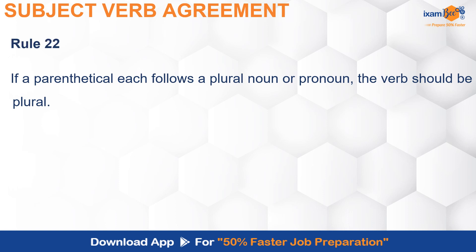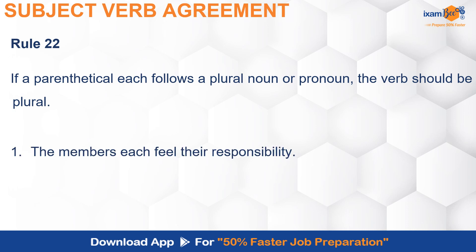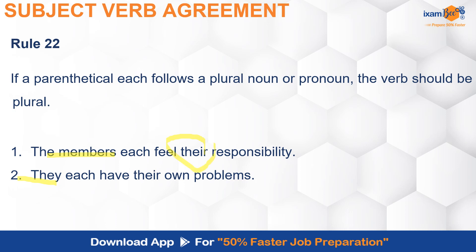The next rule says that if there is a parenthetical 'each' — meaning 'each' is used as an extra addition — and before it comes a plural noun or pronoun, then the verb will always be plural. For example: 'They each have their own problems' or 'The members each feel their responsibility.' Here, before 'each' you see a plural pronoun or plural noun, so the verb used is plural. The pronoun used will also be 'their', not 'his'. Another example: 'Ten each of these books are required' — 'are' is the verb here.